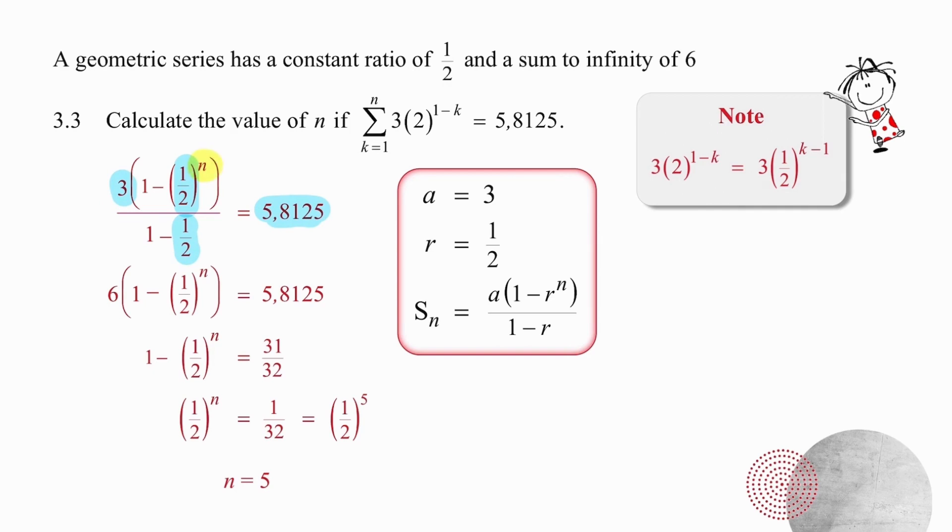So we divide 3 by a half to get 6. Then we divide both sides by 6, which gives us a result on the right of 31 over 32, which is why a half to the n is 1 over 32. You can manipulate this differently or you can get that step by inspection. Break 32 down into 2 to the 5. So 1 over 32 is a half to the power of 5, and that tells us that n equals 5. You can, if you prefer, solve this question with logs.